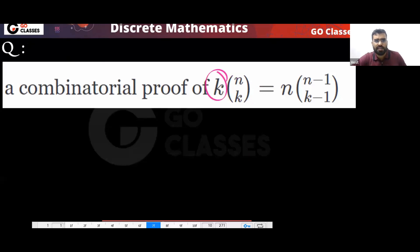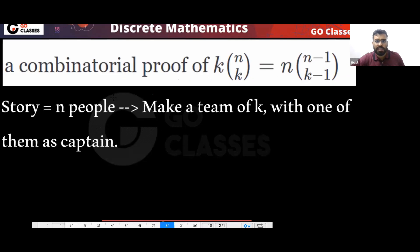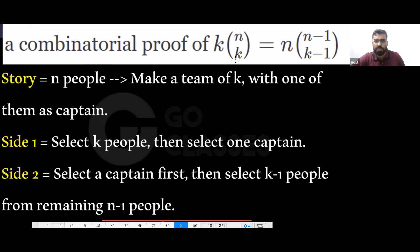And then when you see K·C(N,K), what will come to your mind? From N people, select K people and then make one of them president. And what is the other side? Directly select the president and then select the remaining K minus one people.